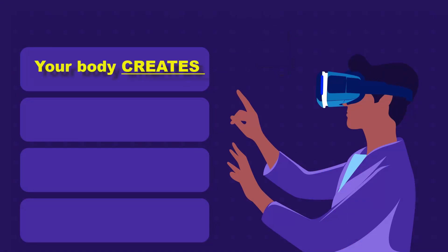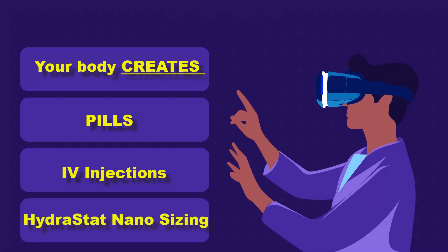First, is that your body creates it, and that's enhanced by the food you eat. Second, is by taking pills, just like we take a lot of vitamins and minerals today. Third, is through IV injection. Yes, a shot. Finally, and fourth, is a new technology called hydrostat, or nano-sizing.